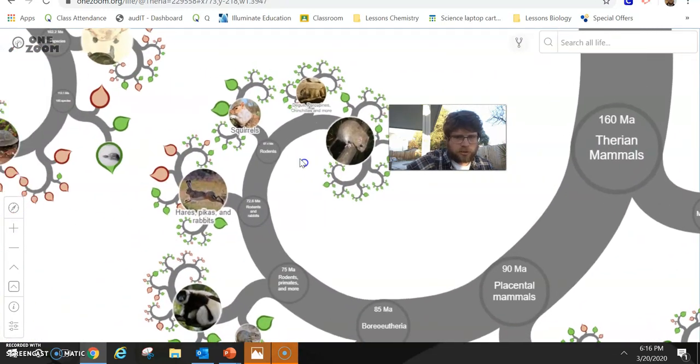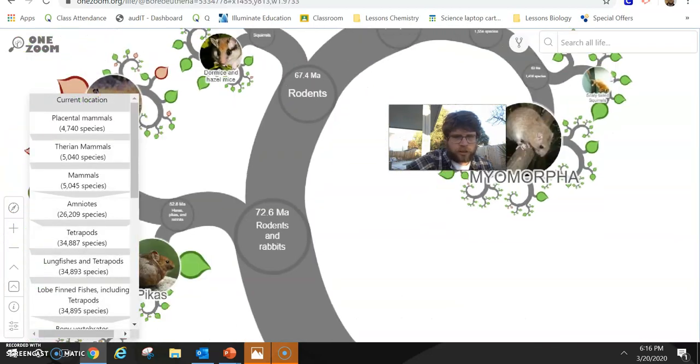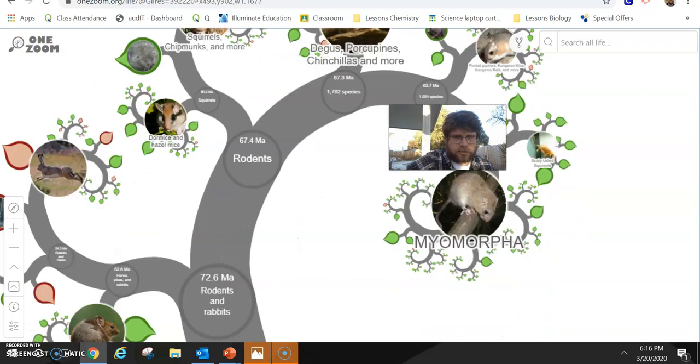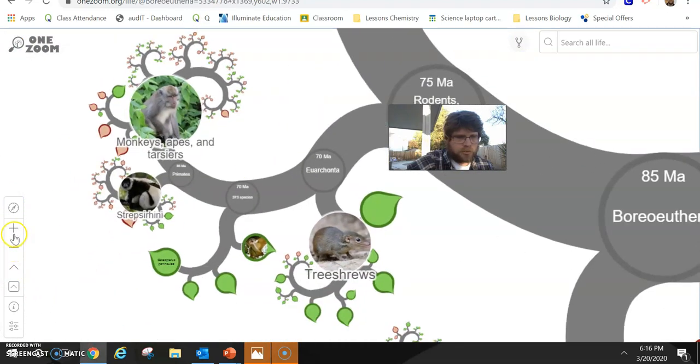Rodents are genetically in terms of homology very similar to us. But primates, monkeys, and apes. That's us.